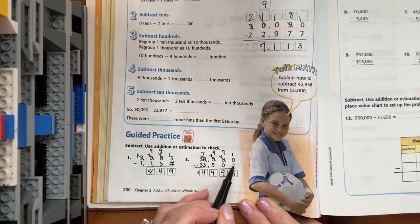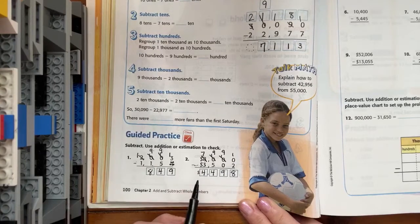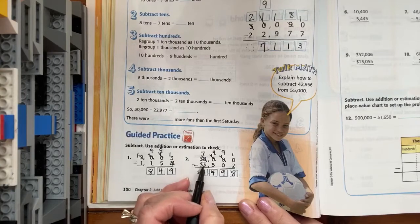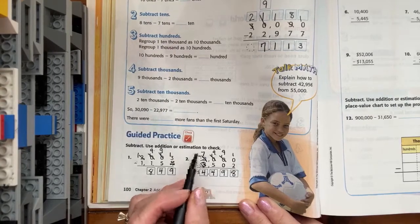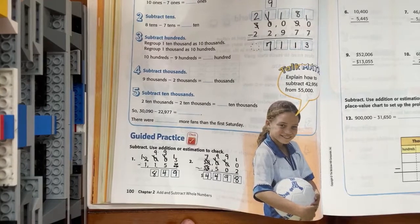So, eight plus two is ten. Nine plus nothing is nine. Four plus five is nine. And four, five, six, seven is seven. That's subtracting across the zeros.